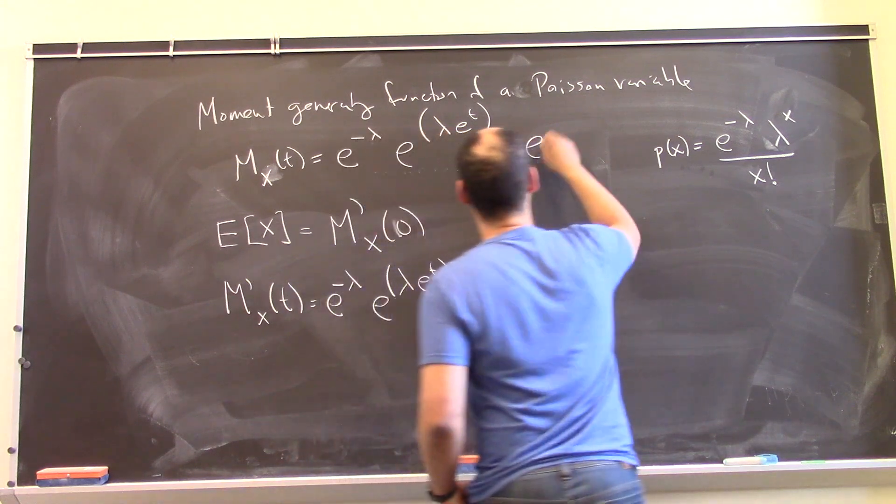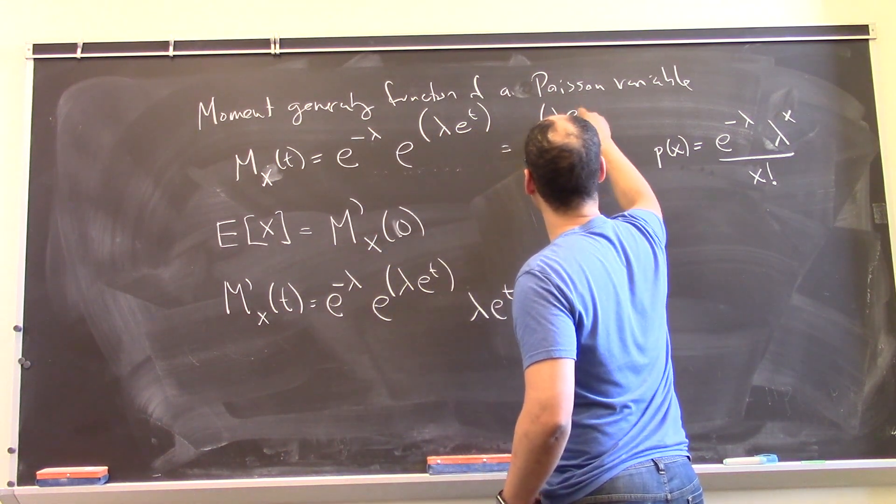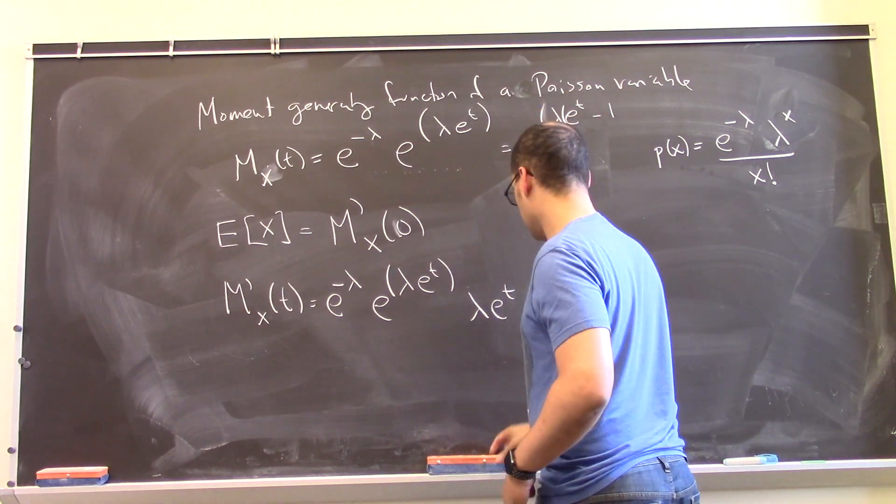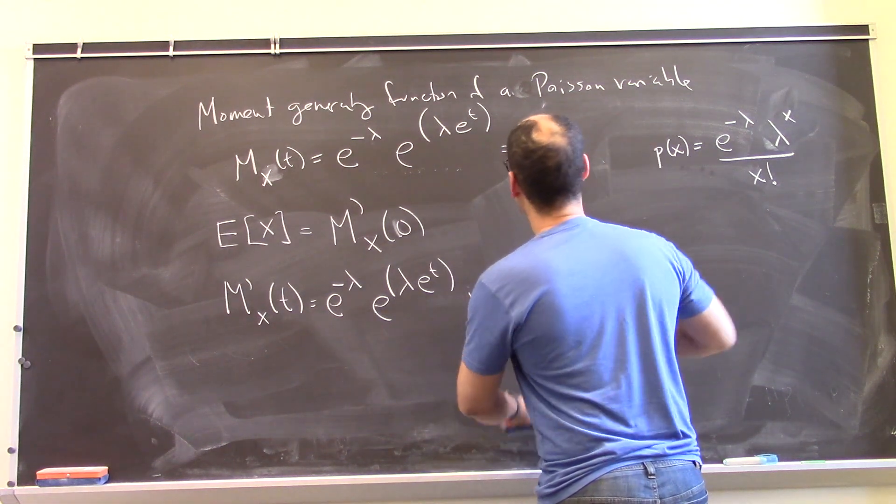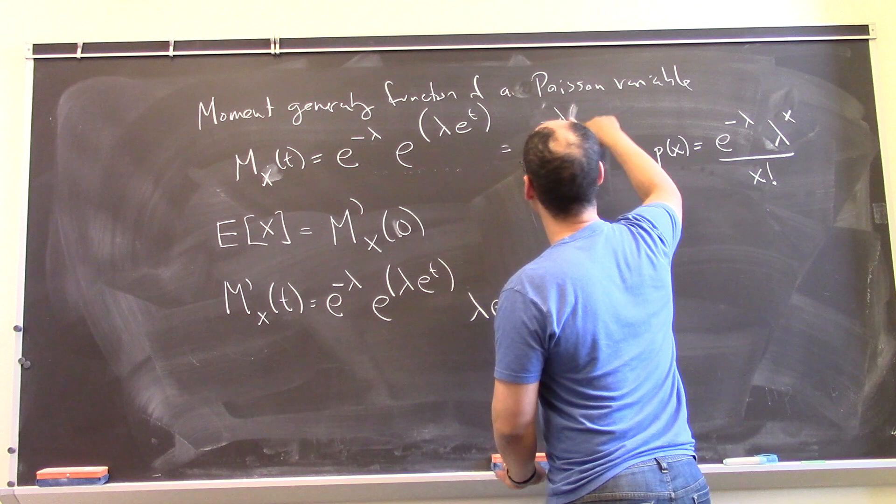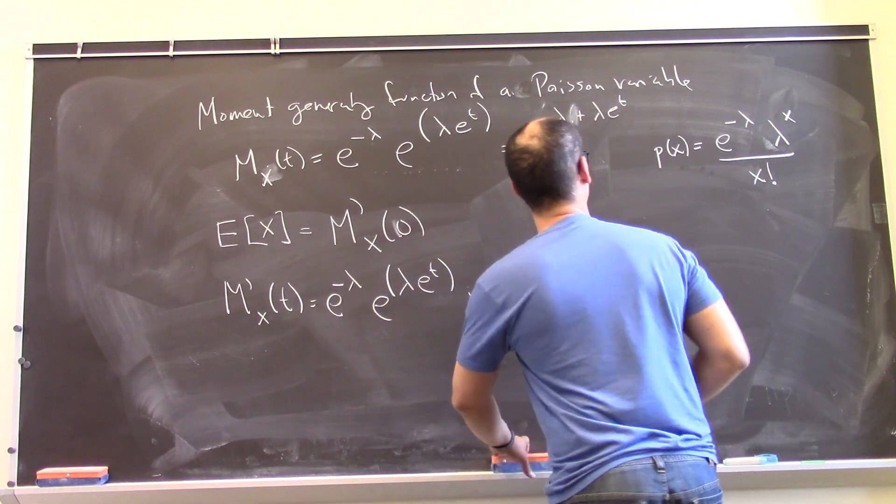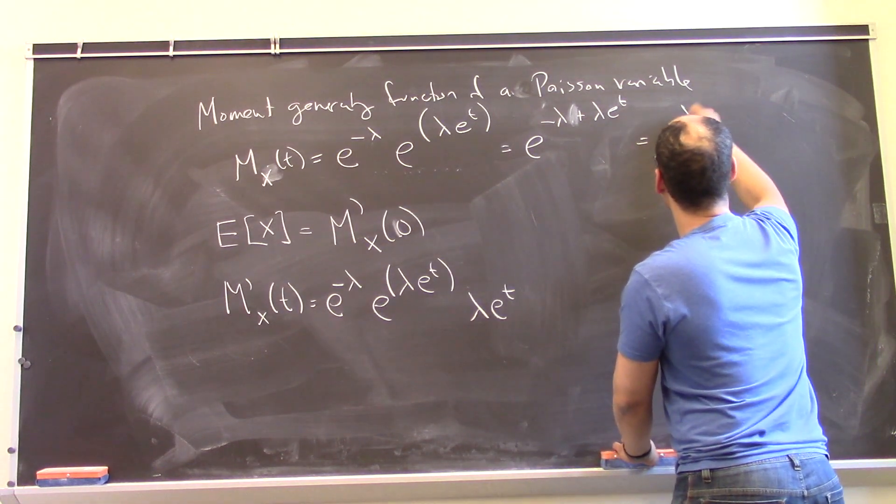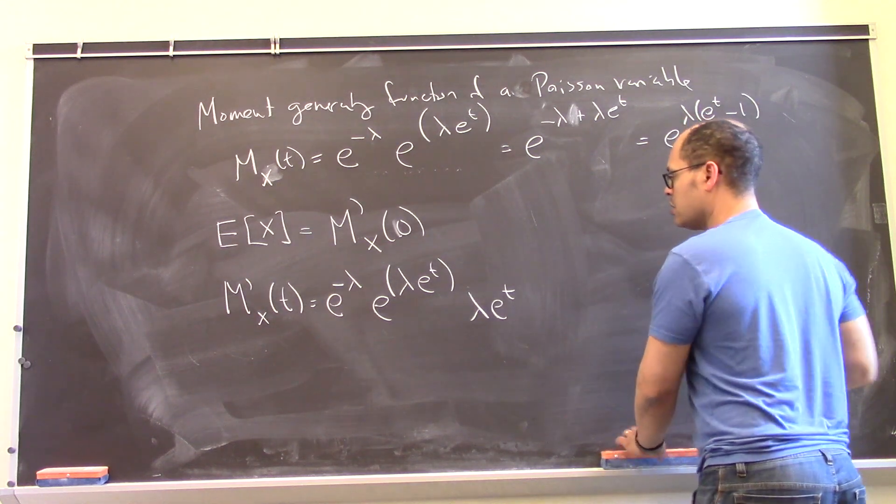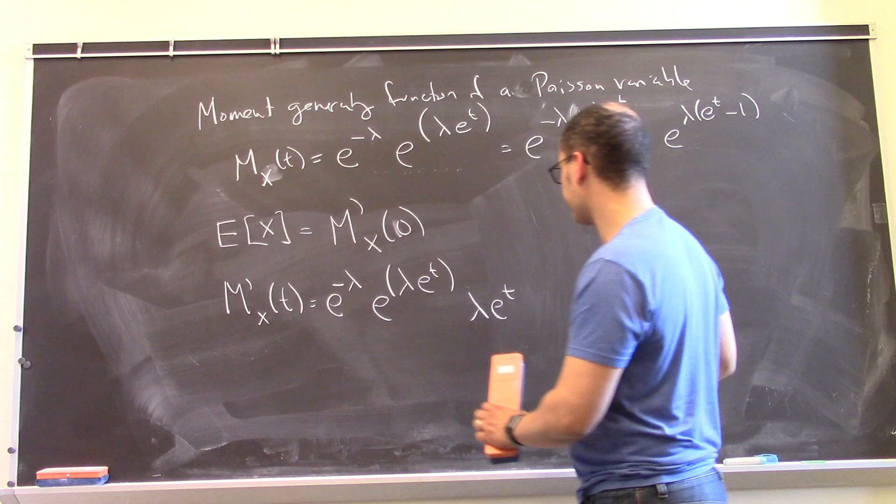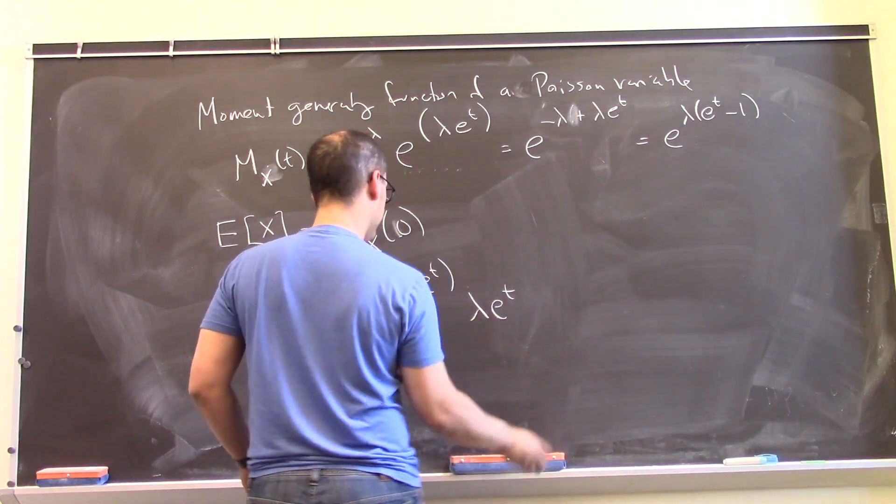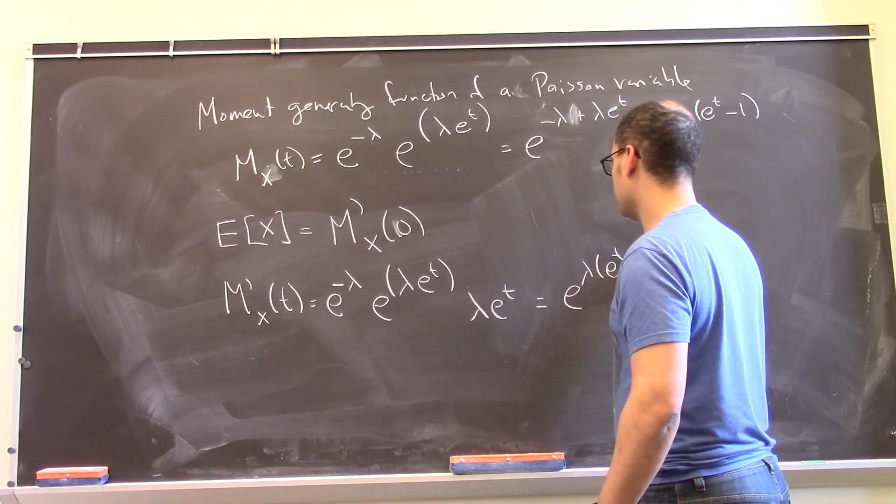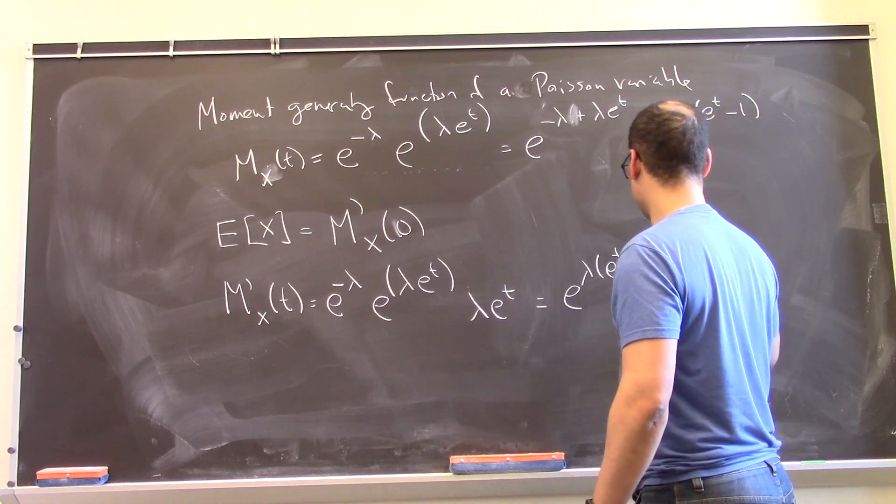Suppose I could write this a little bit differently if I wanted it to. So this is e to the lambda e minus e to the t minus 1. Let me just, excuse me. Minus lambda plus lambda e to the t, which is e to the lambda e to the t minus 1. You know, that's a little bit similar looking. And then, this is e to the lambda e to the t minus 1 times lambda e to the t.